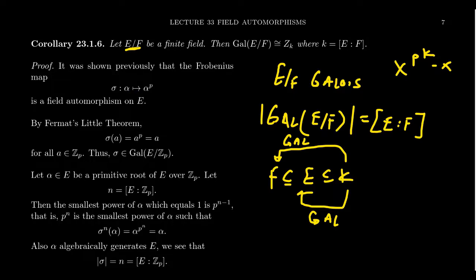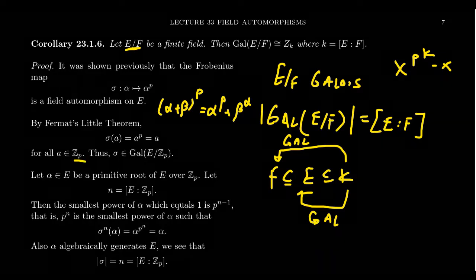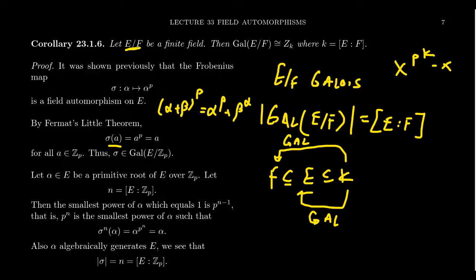This is going to be a field automorphism because of freshman exponentiation. Since we're working characteristic P, we have that if you take alpha plus beta to the Pth power, this is equal to alpha to the P plus beta to the P, so it preserves addition. It will also naturally preserve multiplication since multiplication is commutative. Notice that sigma is going to preserve the subfield Z_P. If you take sigma of A, this is A to the P, which is the same thing as A as a consequence of Fermat's Little Theorem.